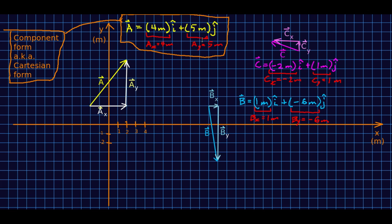This new form of writing vectors is called component form — sometimes also called Cartesian form. It's different from magnitude-direction form, and it turns out there are a lot of things that are much easier to do in component form, in particular it's way easier to add vectors in component form.